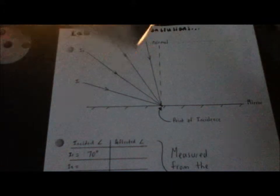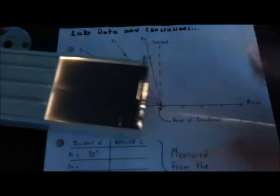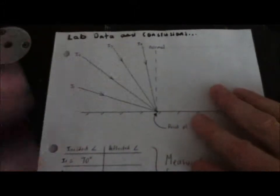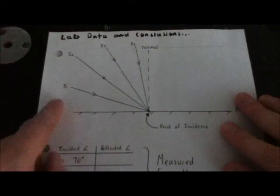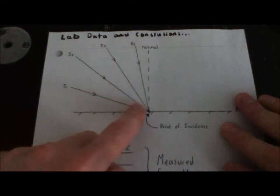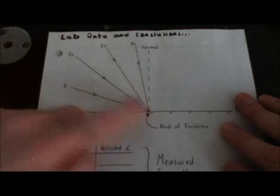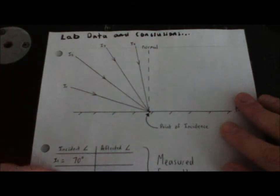We've got a light ray box here producing a single ray of light. We've got our sheet here which is in your notes, and we're going to put the light ray along each of these paths, I1 to I4, with I standing for incident rays.